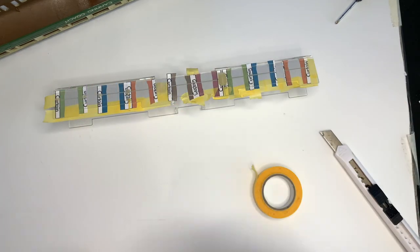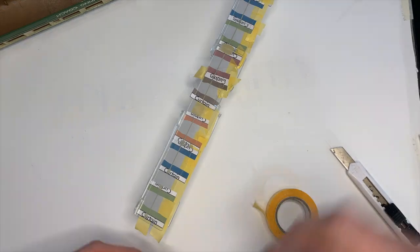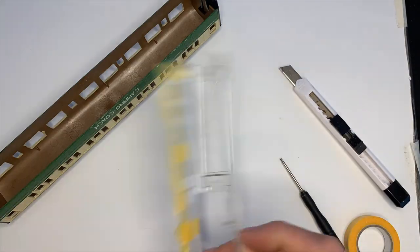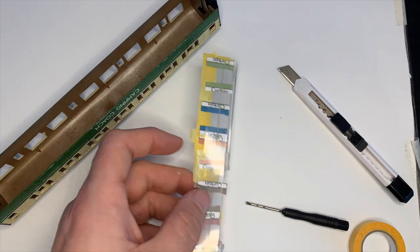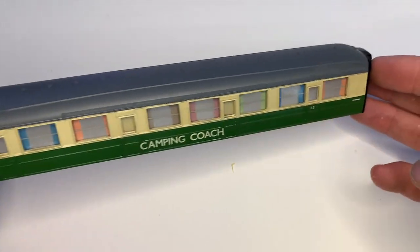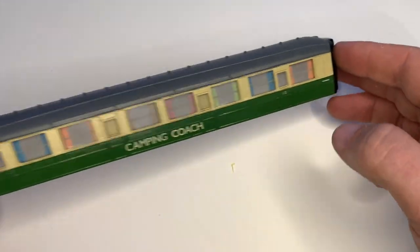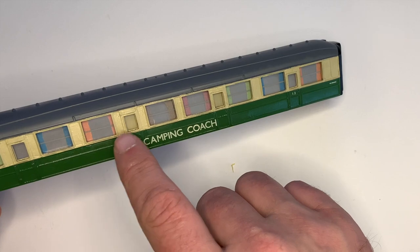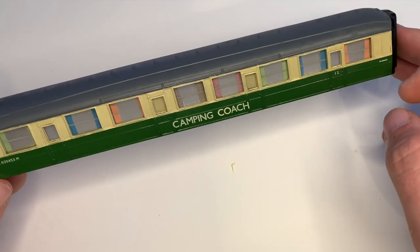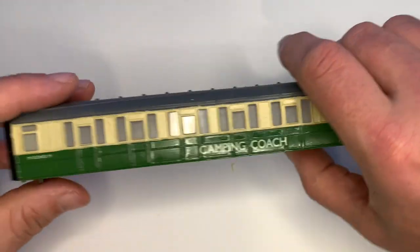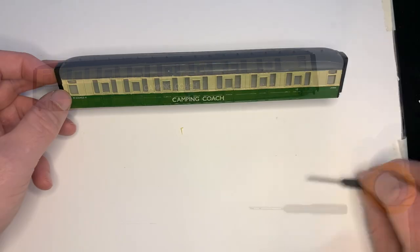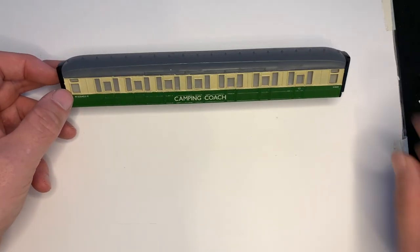So frosted windows with curtains. We've got our two blanked off doors here and here. That's looking good to me and I don't have to see that interior. And on the other side I've just frosted it up with some tracing paper. So I'm just going to try and reassemble this coach.